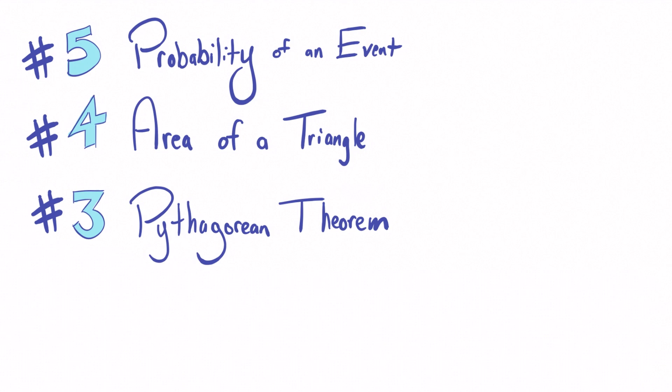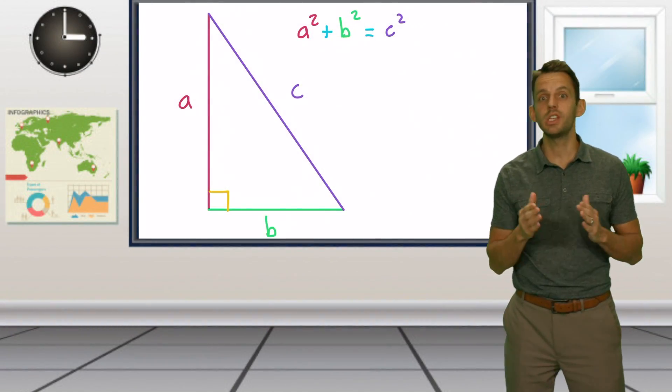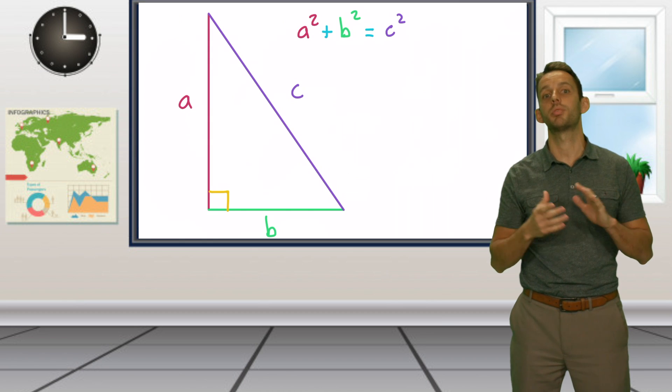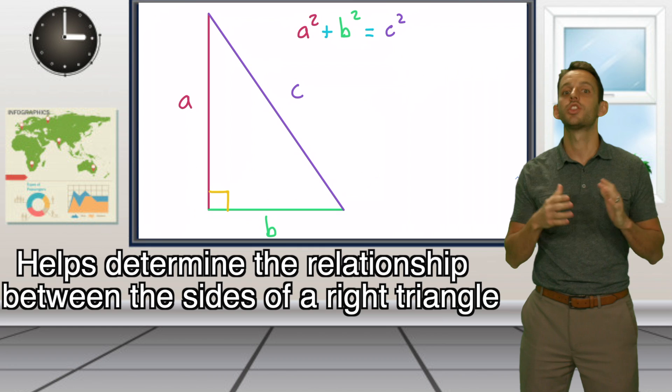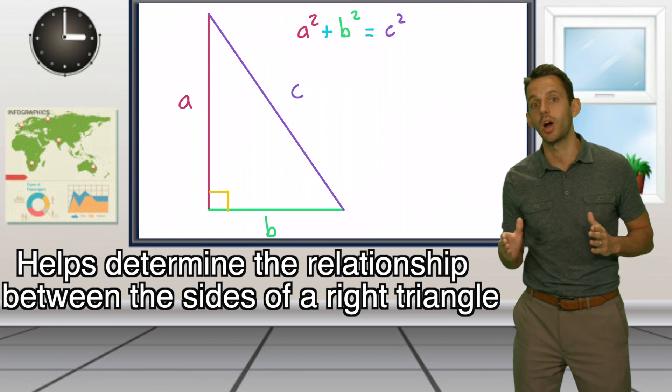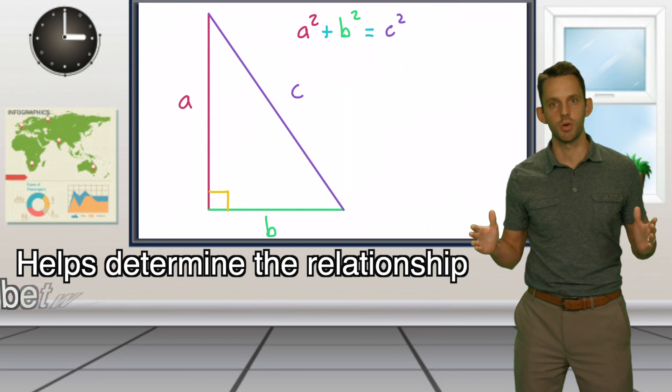Number three, Pythagorean theorem. Another geometry concept, this formula can be applied to a great number of situations. At its core, the Pythagorean theorem helps you determine the relationship of the sides of right triangles, but it's so much more than that.